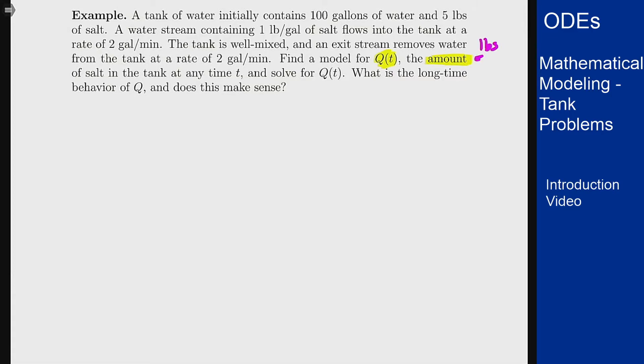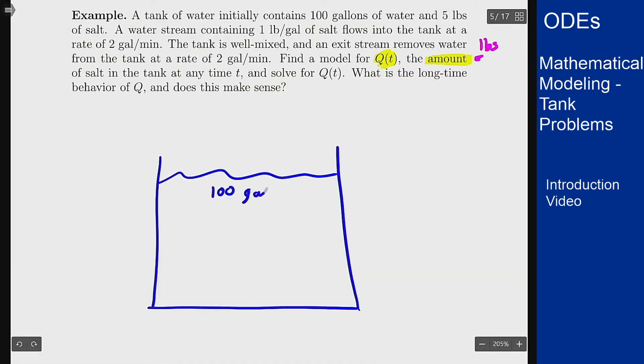Let's start by drawing a picture to fit this situation. So we have a tank and we have 100 gallons of water at least to start. What are our two streams? Well I have an instream that is flowing at a rate of 2 gallons per minute and has 1 pound per gallon of salt. Tank is well mixed. Let's draw a little mixer thing. And there's an outflow stream also at a rate of 2 gallons per minute.